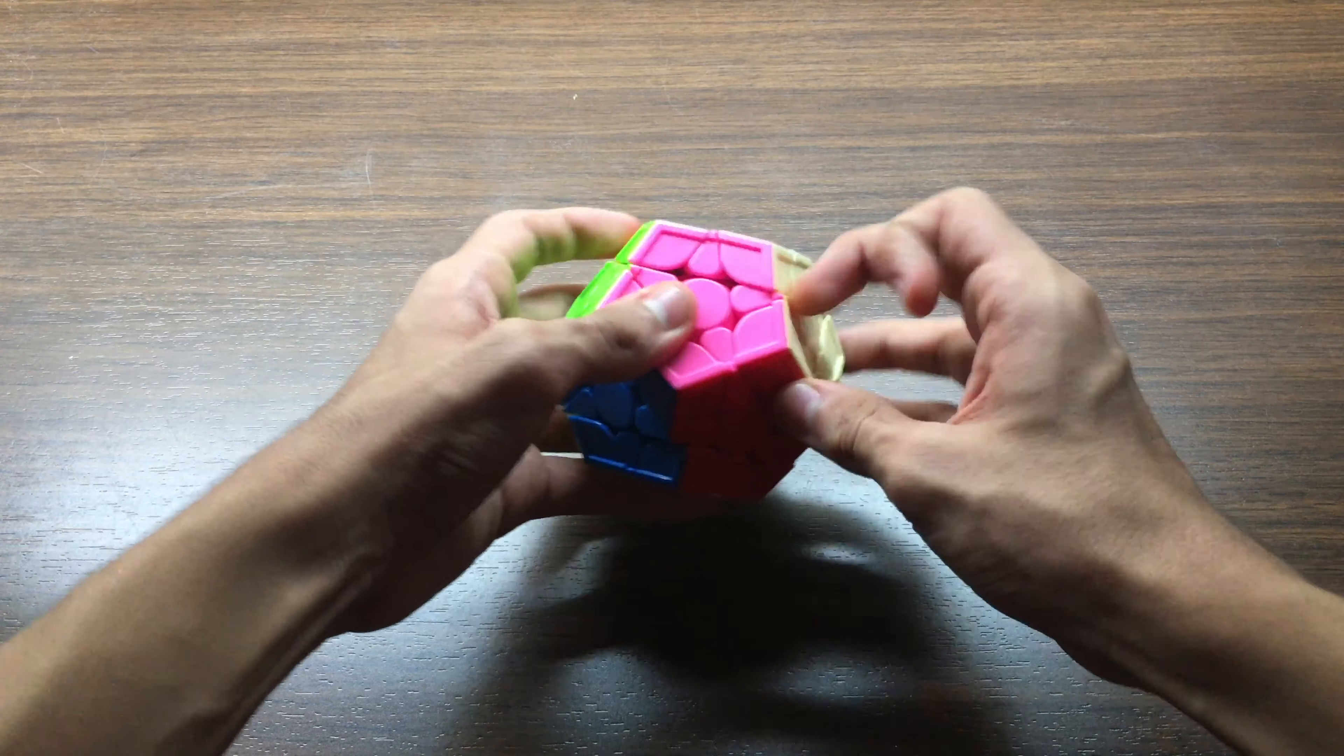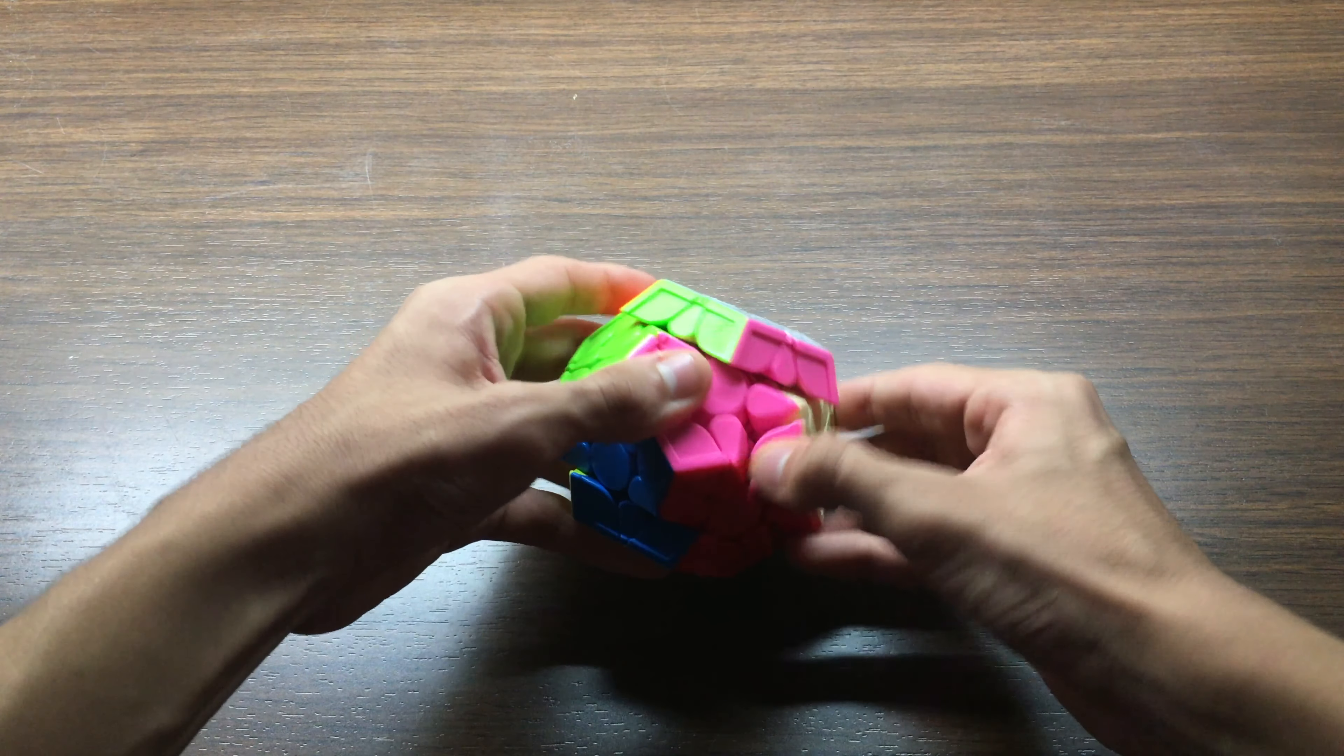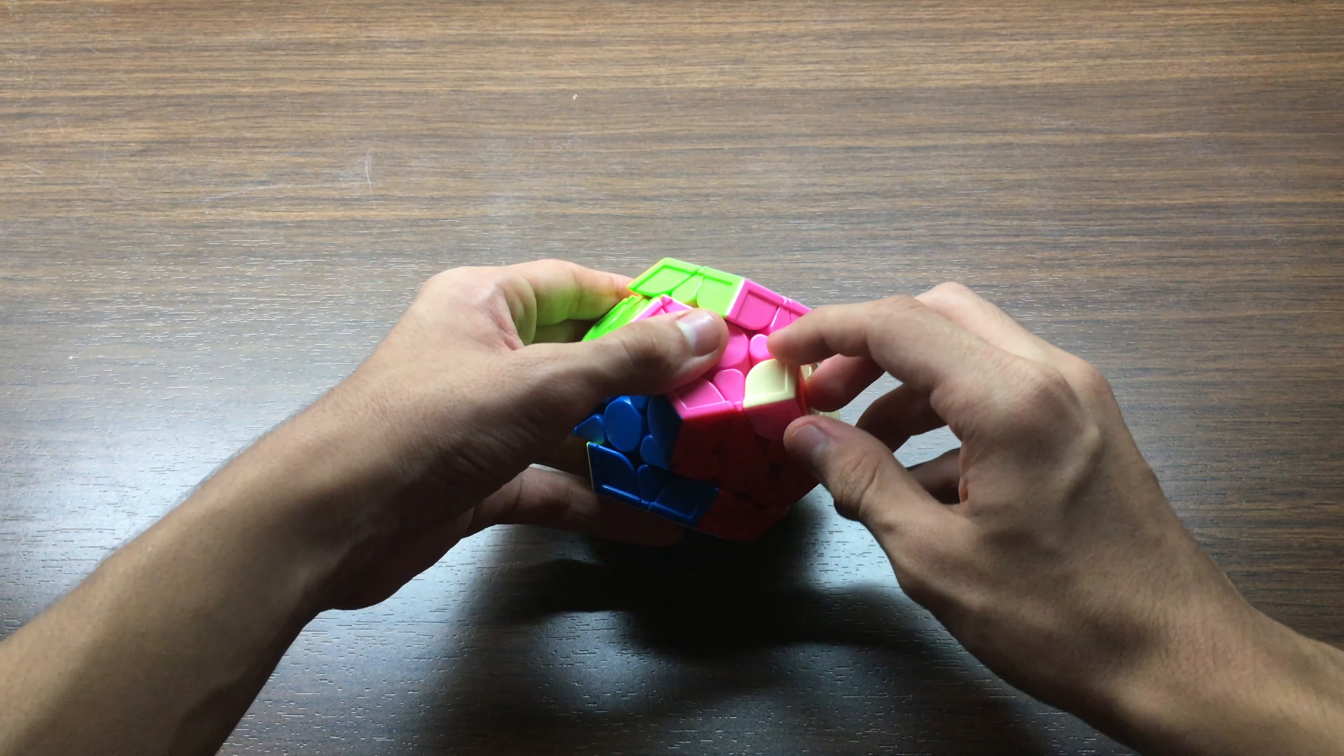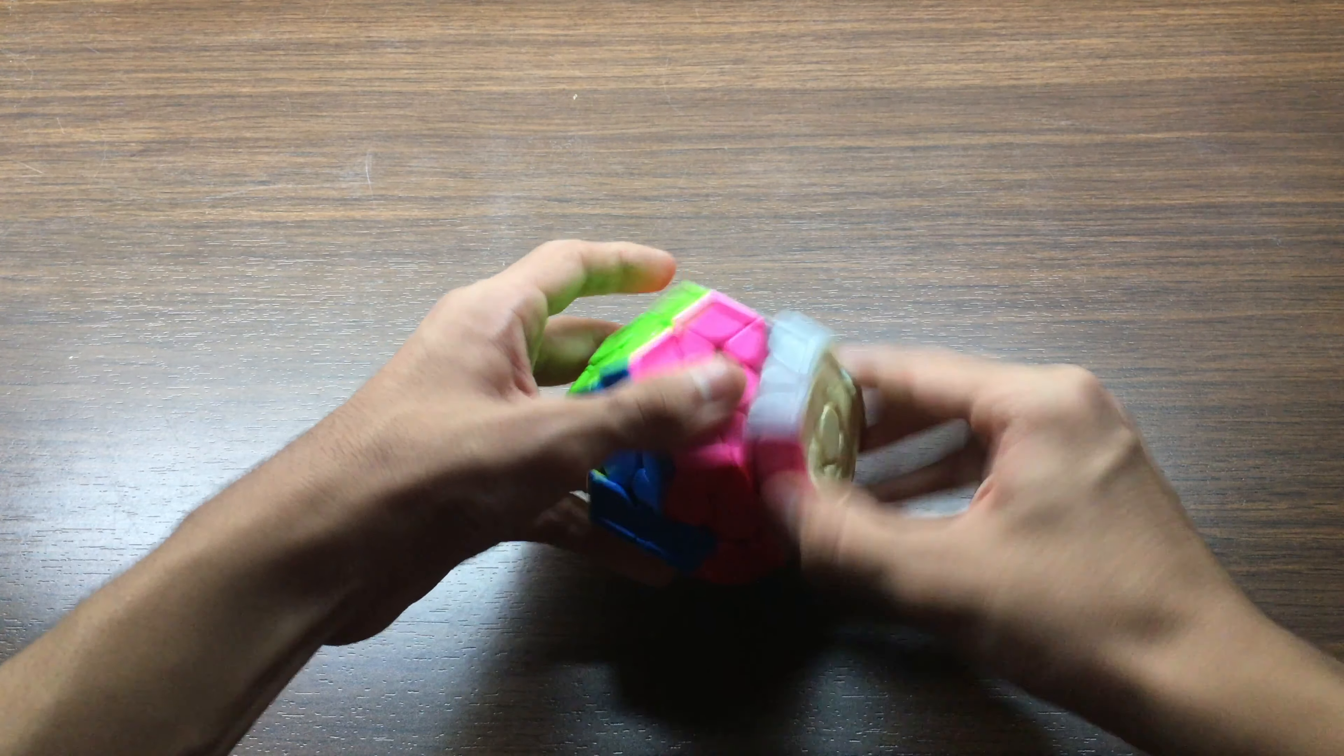Let's quickly go ahead and check out corner cutting. It's pretty good corner cutting, not as good as the V2M. Oh shoot, there's a corner twist. It's not as good as the V2M but it's more than enough for a Megaminx.